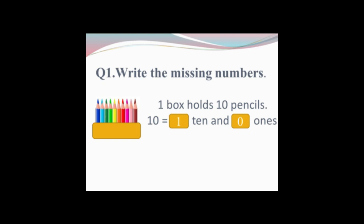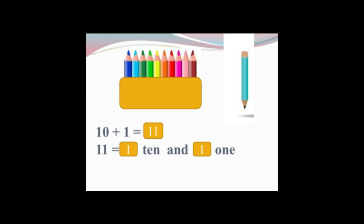Now move to part B. Here is a box of color pencils and this box holds 10 color pencils. But you can see one pencil is outside the box. 10 pencils are in the box and 1 is outside the box. We are going to add them: 10 plus 1 is equal to 11. The answer is 11, so we write 1 ten and 1 one.